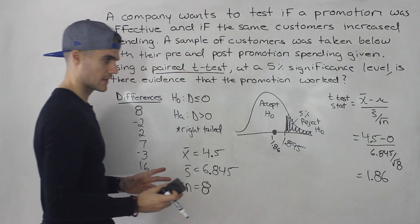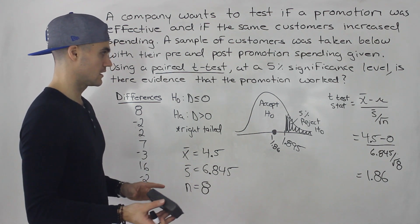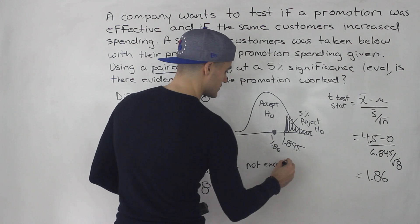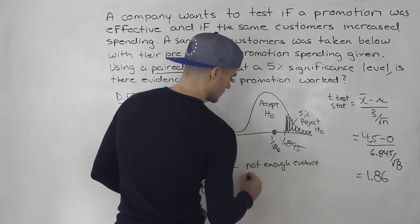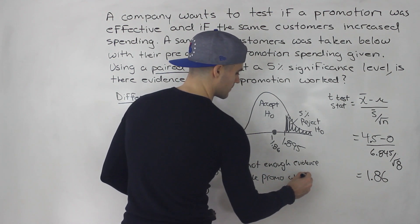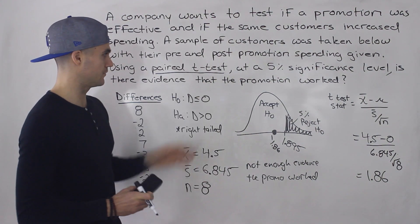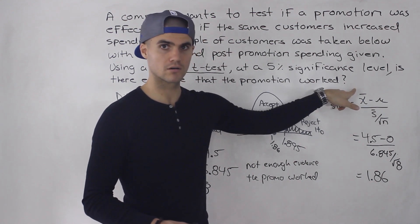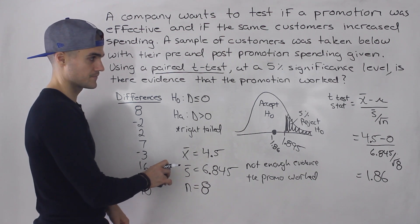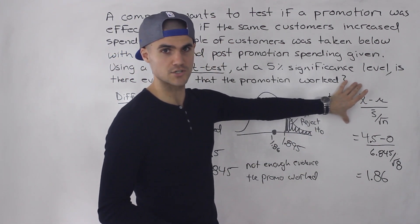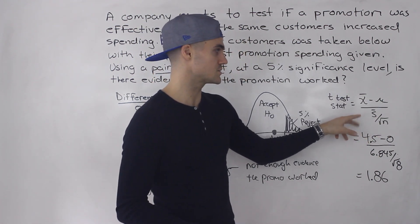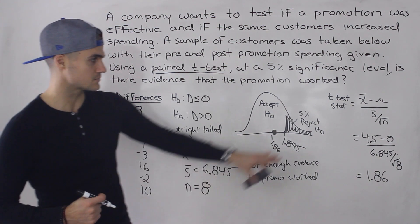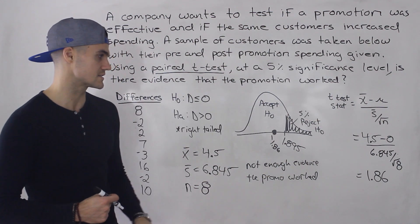Since 1.86 falls in the acceptance region, we fail to reject the null. In this example, that means there is not enough evidence that the promotion worked. One thing to note: in some textbooks, the test statistic formula uses different notation — like d̄ for the sample mean of differences — but the formula is exactly the same. I'm using familiar notation, but just be aware you might see different letters.